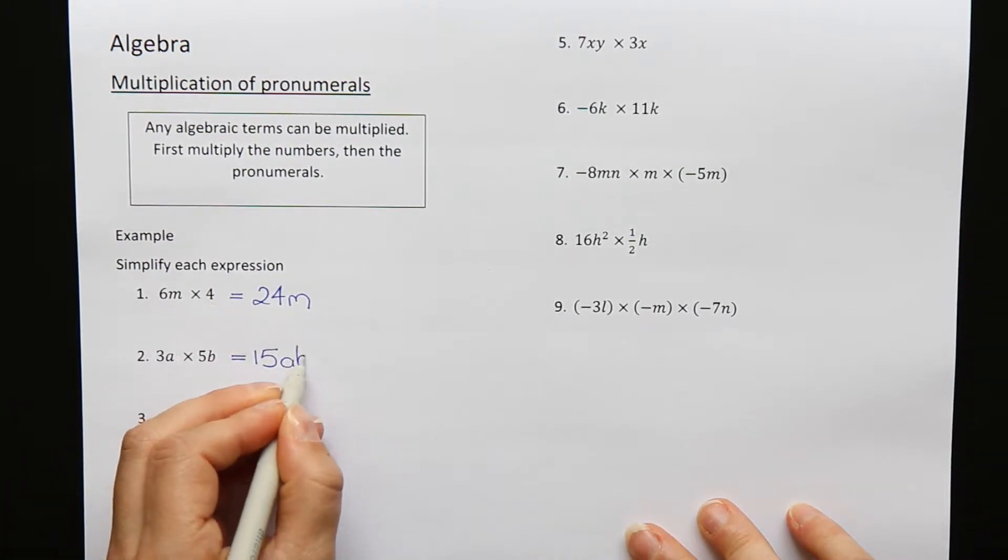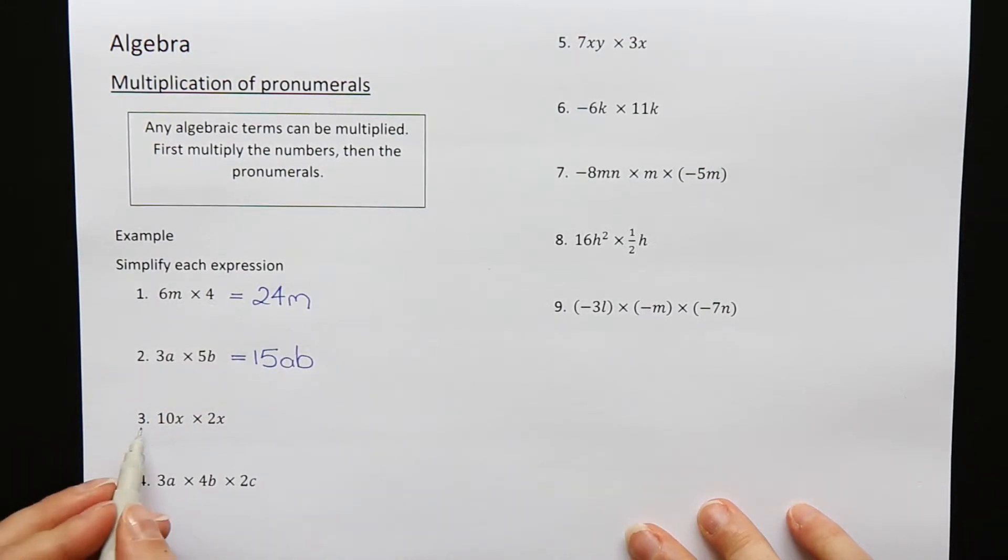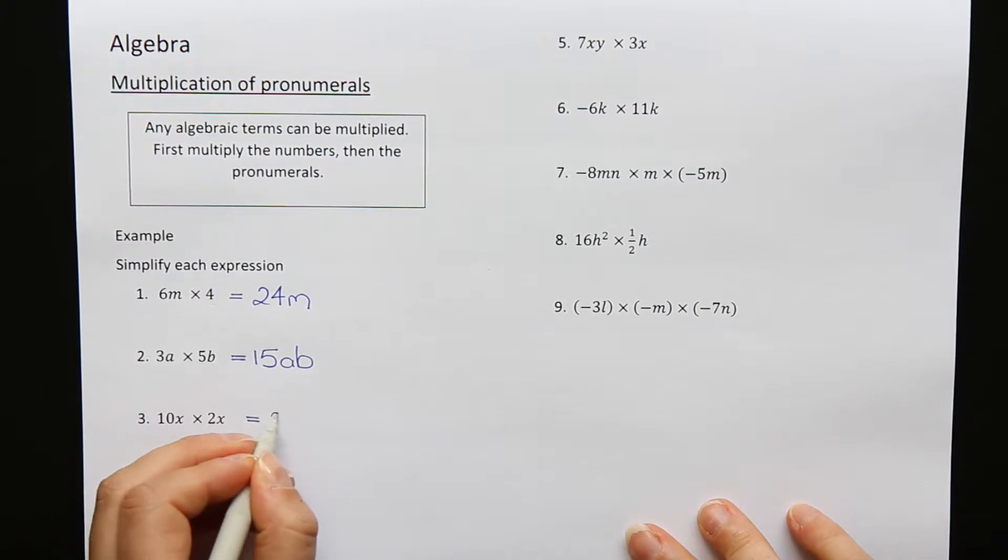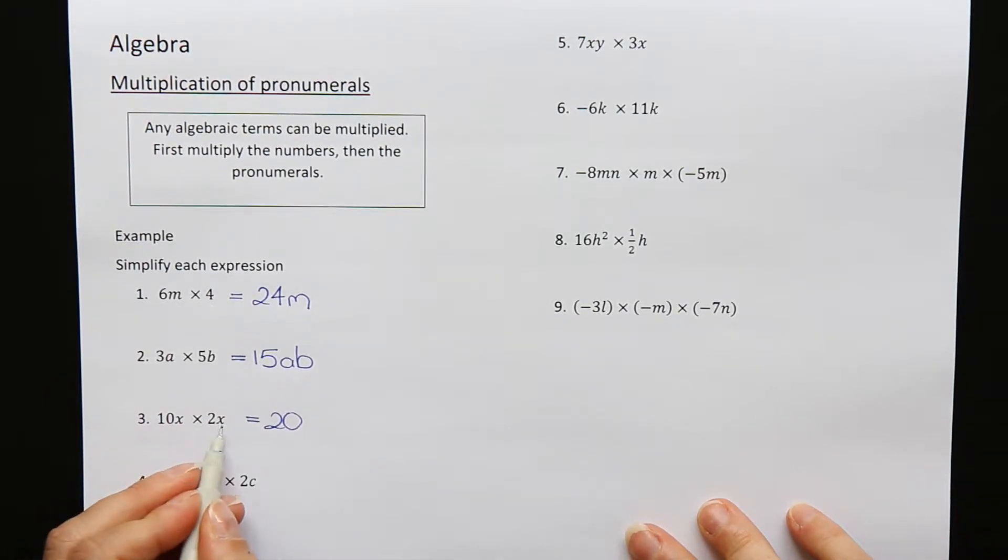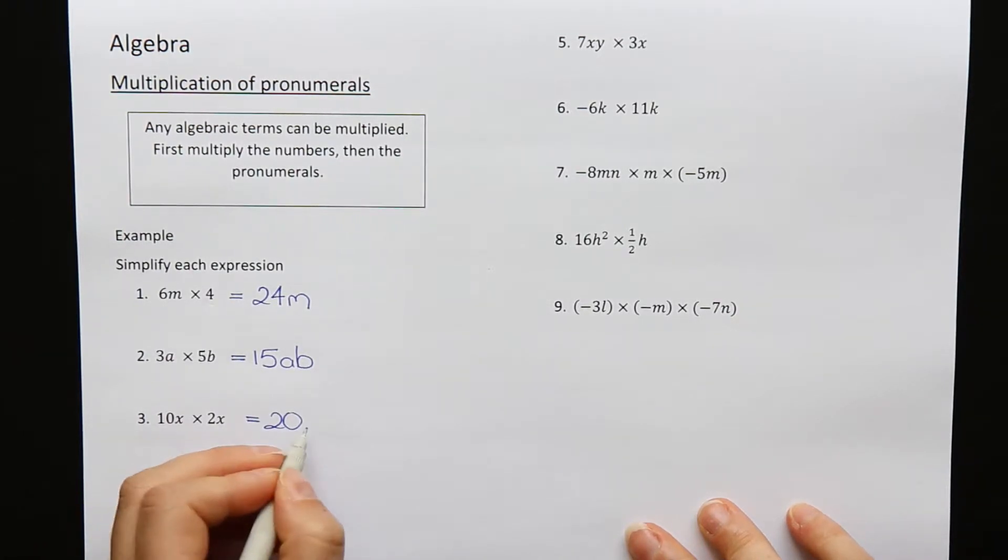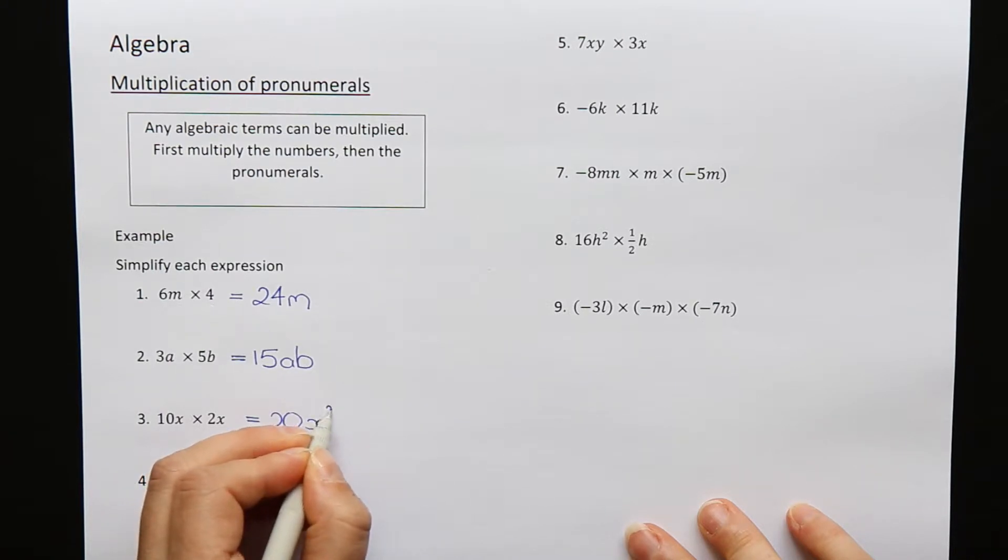Multiply and put here at the end. Question 3: 10x times 2x. Multiply the numbers—10 times 2 is 20. And x times x, well I could write xx, but the better way to write it is x squared, which is the short way of writing x times x.